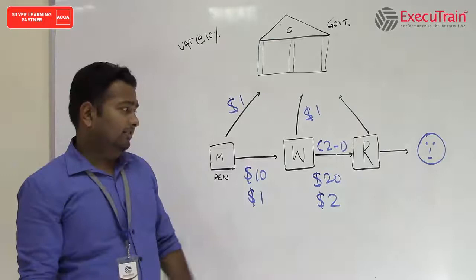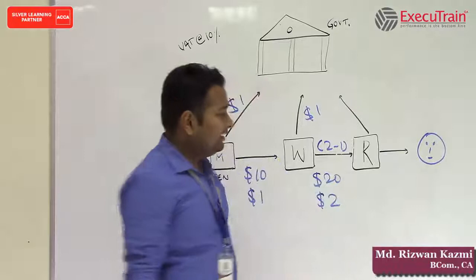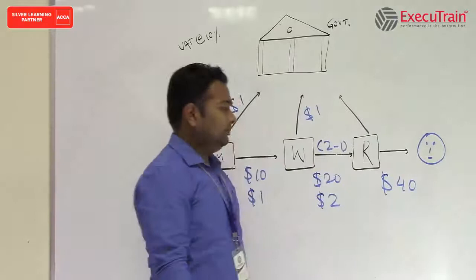Now when the retailer sells the last stage to the customer, this guy sells to the customer at $40. So the VAT now comes out to be at the rate of 10%, which is $4.